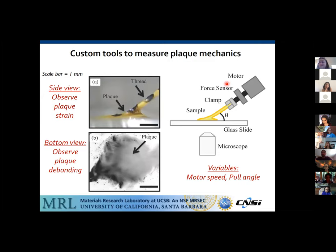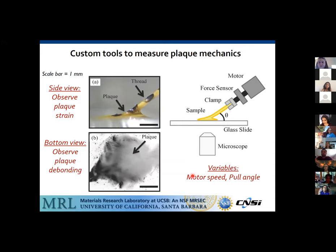The way we measure the mechanics is by building custom test frames to apply displacements and measure forces. We've built a small-scale mechanical testing device — like the INSTRON I showed you in the tutorial, but tiny so we can clamp tiny threads. We have a visualization system so we can observe the plaque both from the side and from underneath — viewing both the adhered interface and the plaque from the side. We can change the pull angle and the motor speed, and we've done a lot of studies on this.